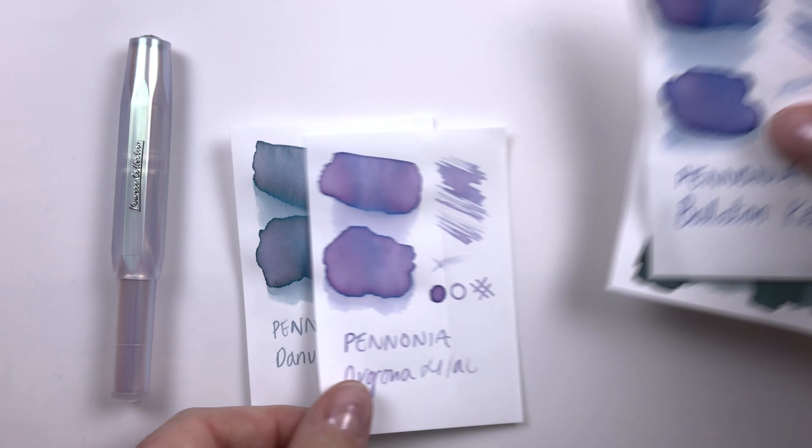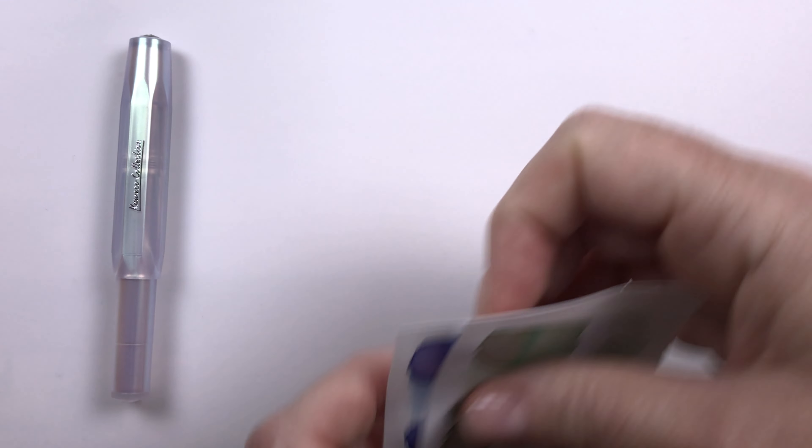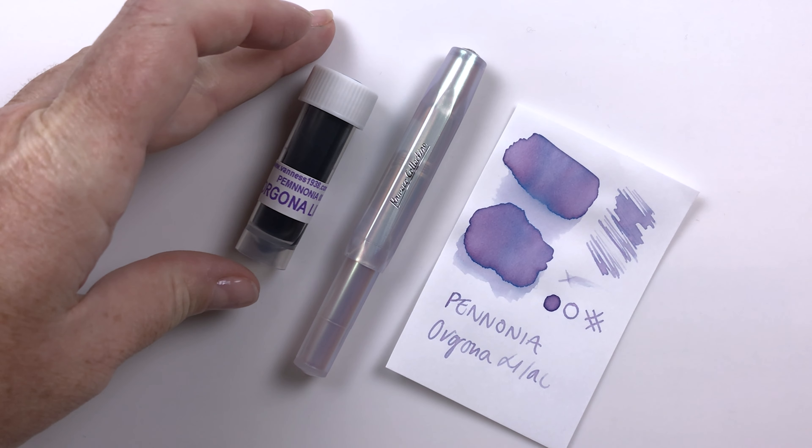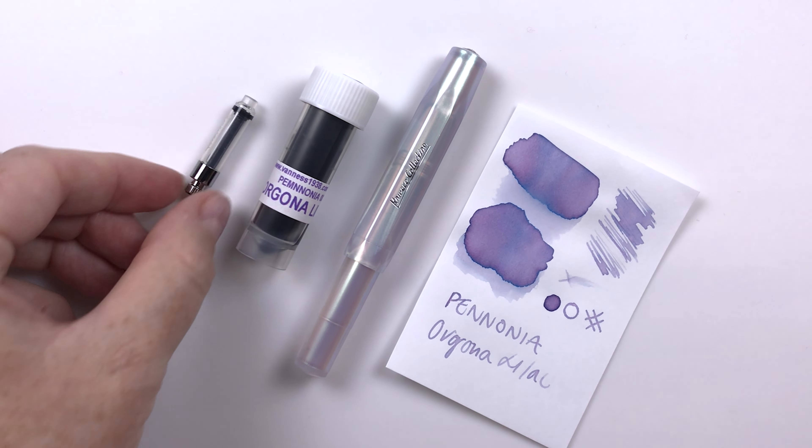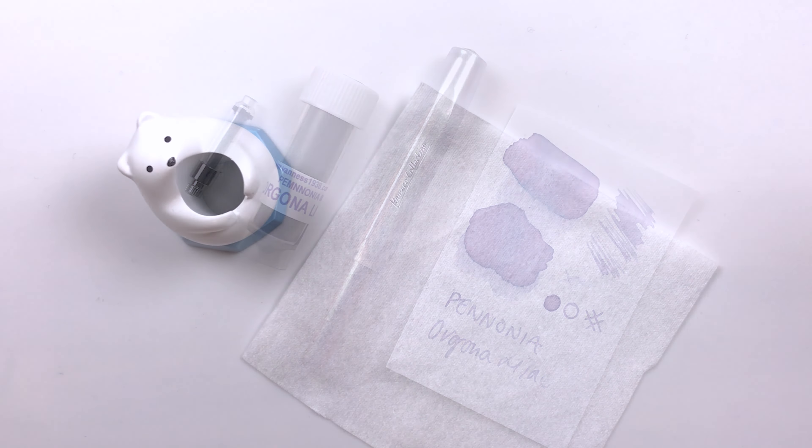So here they all are swatched out and I think any of them would be a good match but I think I'm going to go with the Pennonia Orgona Lilac because this purple is just so pretty and I feel like the pen has a little more purple in it than any of the other colors.